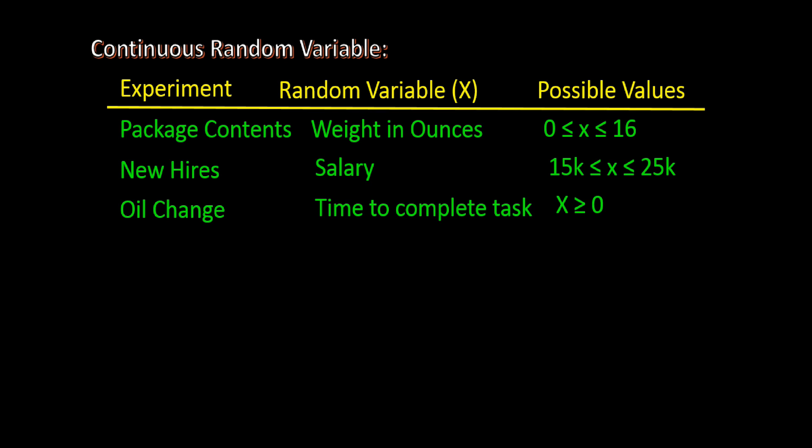This table is a table of continuous random variables. Remember, a continuous random variable can take on any numerical value within some interval. For example, if our experiment consists of weighing the contents of a cereal box and the maximum the box will hold is 16 ounces, then the random variable is the weight and the possible values of x can be any value between 0 and 16. If the experiment is to measure the salary of new hires with a hiring range of between 15 and $25,000, then the random variable is the salary and the possible x values can take on any value between 15 and 25,000. If the experiment is defined as changing the oil in a car and the random variable is time, then x can take on any value from 0 minutes to some undetermined amount of time, so we can simply say x is greater than or equal to 0.